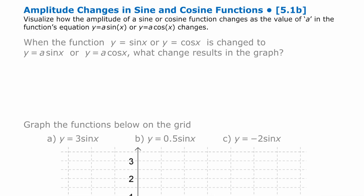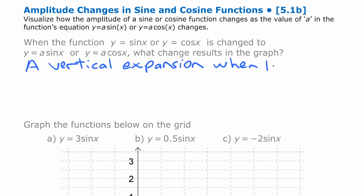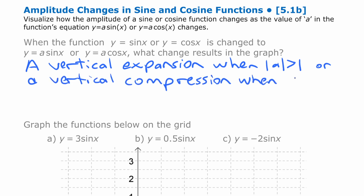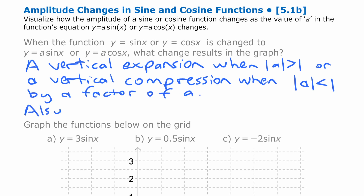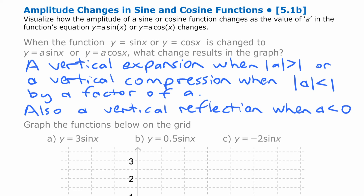In general, when you change the equation so there's an a value other than 1, you have a vertical expansion when the absolute value of a is greater than 1, or a vertical compression when the absolute value of a is less than 1 — by a factor of a in each case. And there's also a vertical reflection if a is less than zero.